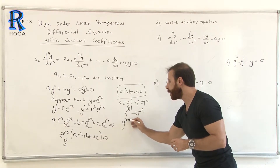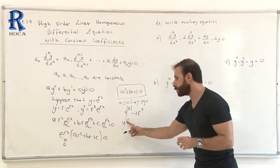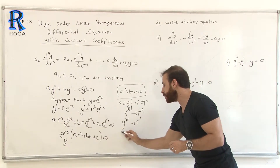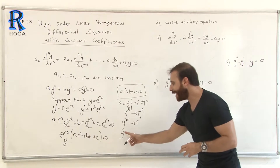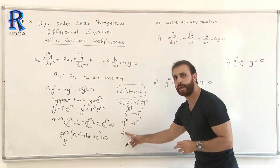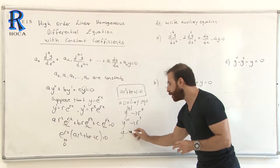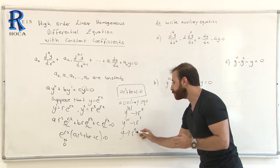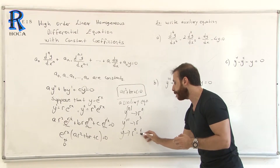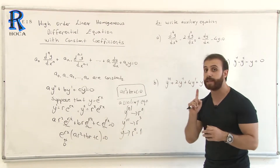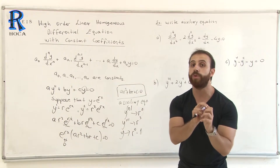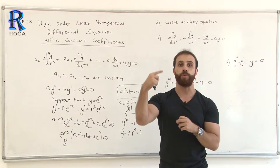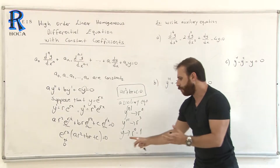In general, an nth order derivative corresponds to r to the power of n. For example, y''' (order 3) gives r³. For y itself, there is no derivative, so the order is 0, meaning r⁰ = 1. Be careful — we do not write r for y; we write r⁰ = 1.